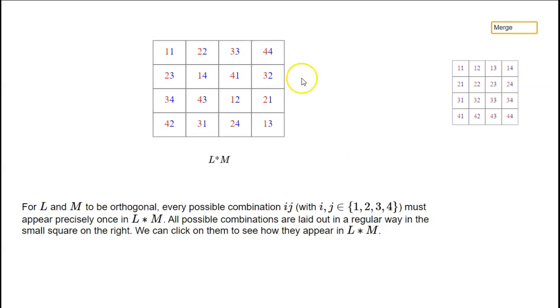Now we've got a 4×4 array, and in each case you've got the left-hand number shown in red that came from L, and the right-hand number in blue came from M. So we've got all these combinations here.